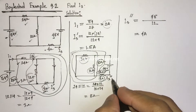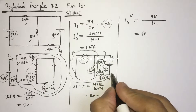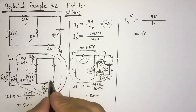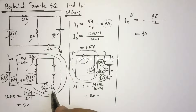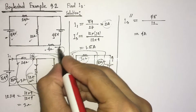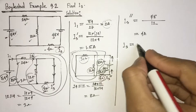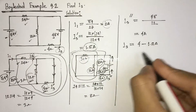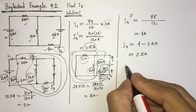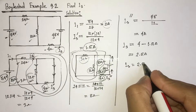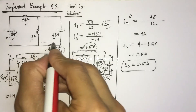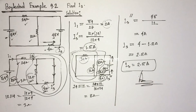We see that the direction of I3 double prime current is upward, but the direction of I3 prime current is downward. So the directions of these two currents are opposite to each other. That means the resulting I3 current will be 4 minus 1.5, which equals 2.5 amperes. So I3 equals 2.5 amperes, flowing in the upward direction. This is the answer. Thanks for watching.